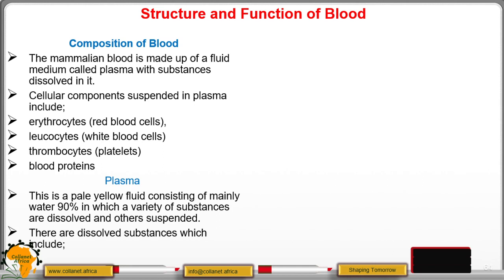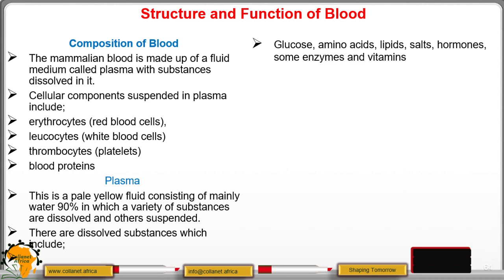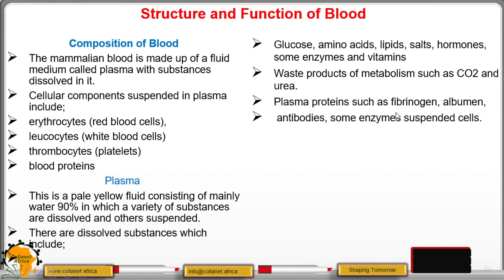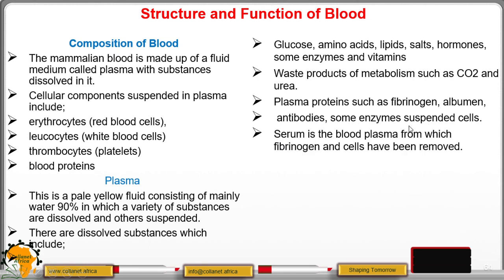There are dissolved substances which include glucose, amino acids, lipids, salts, hormones, some enzymes, and vitamins. It also contains waste products of metabolism such as carbon dioxide and urea. There are also plasma proteins like fibrinogen, albumin, antibodies, and some enzymes.